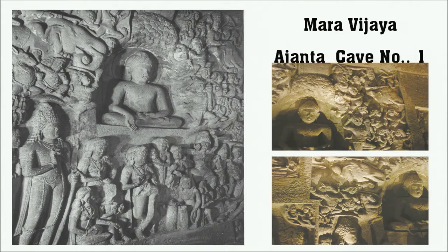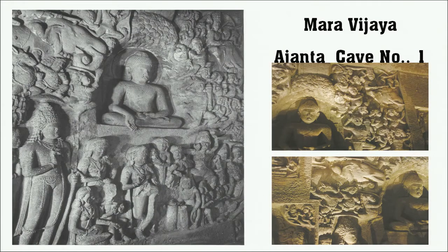In Ajanta cave number 1, you can look at how complex the compositions became. From the beginning there used to be small panels depicting a few things, but now entire stories are built around the sculpture — Buddha sitting at the center with devotees praying around him, everyone emphasizing the centrality of Buddha. All the surrounding narratives are happening simultaneously, which was a peculiar feature of the Gupta period.